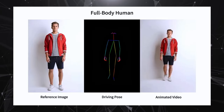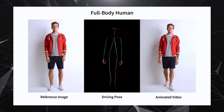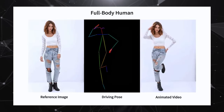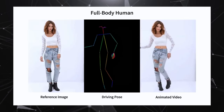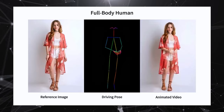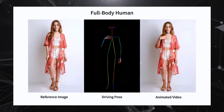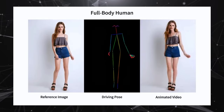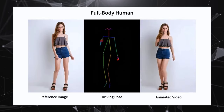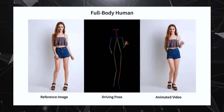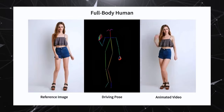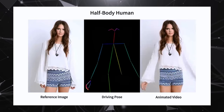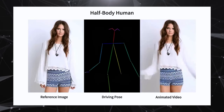Now let's look at its limitations. First, like many visual generation models, the model may stumble when it comes to producing super steady results for hand movements, occasionally resulting in distortions and motion blur. It's like trying to capture the elegance of a dance move without a steady partner.